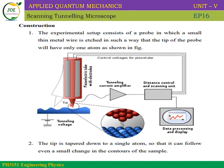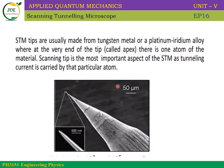The tip is tapered — not cylindrical, but cone-shaped — down to a single atom at the point. The edge is macroscopic but the last point is a single atom, sharply fabricated. This pin is made of platinum-iridium and is manufactured with a sharp edge so that only one atom is at the tip.